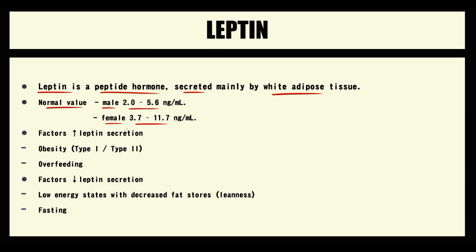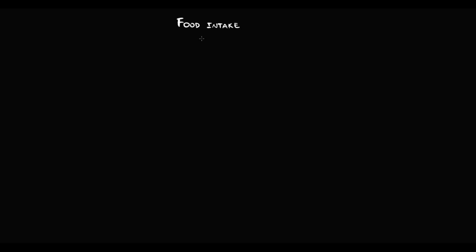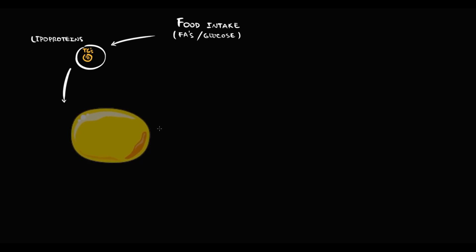Let's get started. With intake of food as fatty acids or carbohydrates, some portion we utilize straight away for energy demands. But most fatty acids we store in the form of triacylglycerols in adipose tissue. Fats are transported by lipoproteins, and once lipoproteins deliver fatty acids to adipose tissue, the total amount of triacylglycerols in adipose tissue increases. With increase in triacylglycerols, the mass of adipose tissue increases.